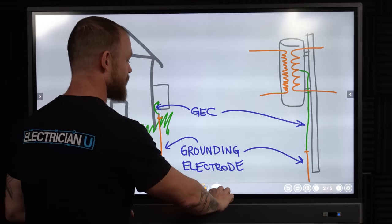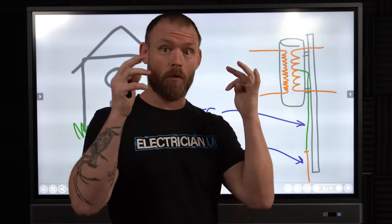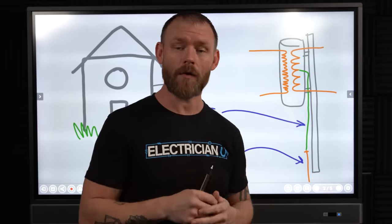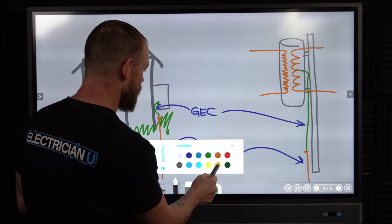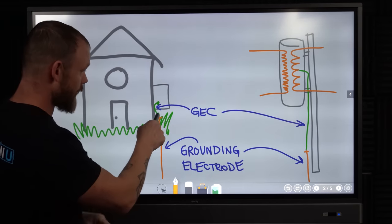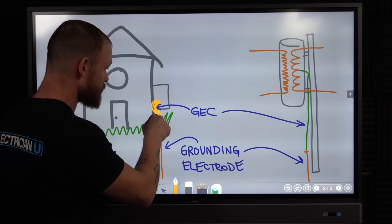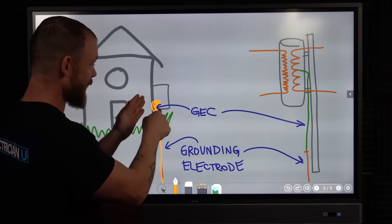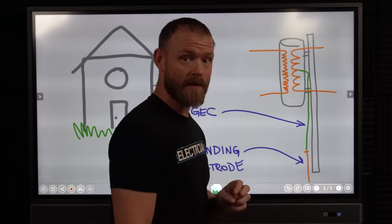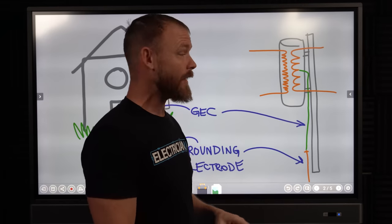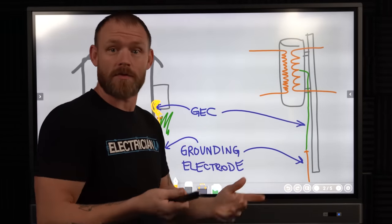The first thing we need to understand is what a grounding electrode is. When talking about a GEC — if you keep seeing people throw that term around — they're talking about a grounding electrode conductor. Specifically, that is the conductor we run to the grounding electrode. We run a conductor from a ground bus down to a ground rod; the ground rod is a grounding electrode, so that conductor in between is called a grounding electrode conductor. Over at a utility pole, same thing — they drive ground rods at the bottom and run a conductor down, intentionally grounding the system.